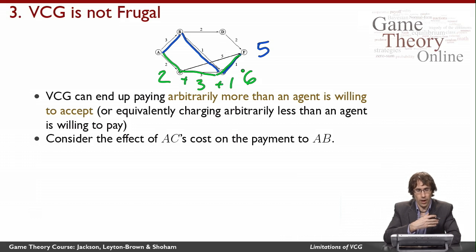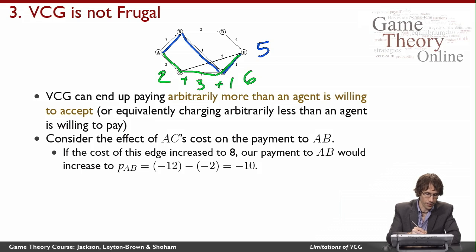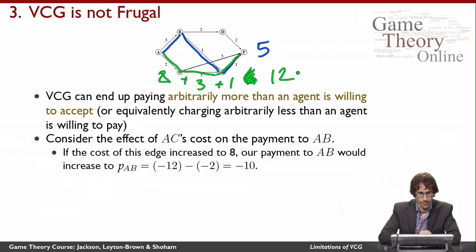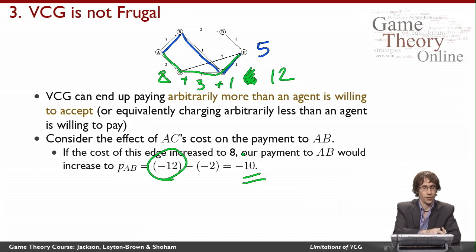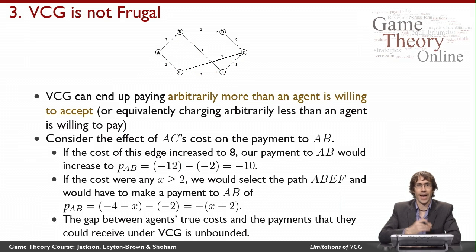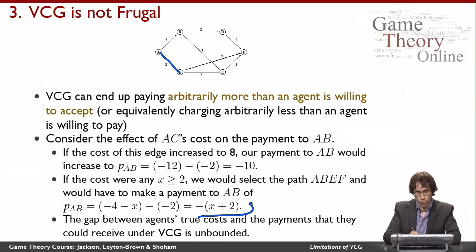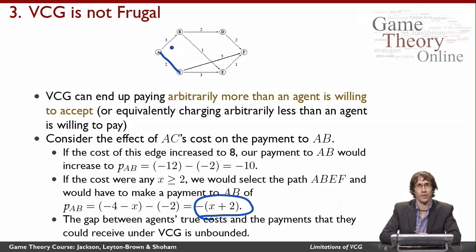This is also a possible problem in cases where agents are paying us rather than being paid. If, for example, the cost of edge AC increased to 8, then the second shortest path cost would be 12, and that would change the payment to AB — it would go up by 6. So we increased someone else's value by 6, and without changing anything about what AB was willing to accept, we also changed our payment to AB by 6. Indeed, if the cost of edge AC was any X greater than 2, we would end up making a payment to AB that depends on X and not on AB's own value. This means the gap between agents' true costs and the payments they could receive under VCG is unbounded.